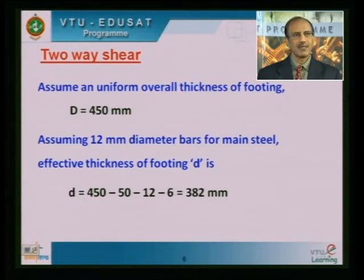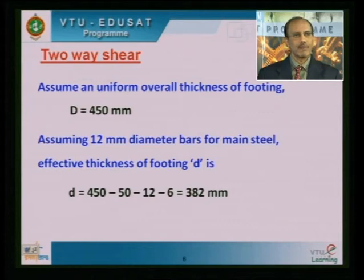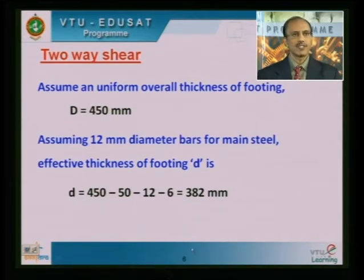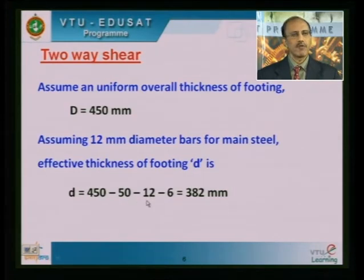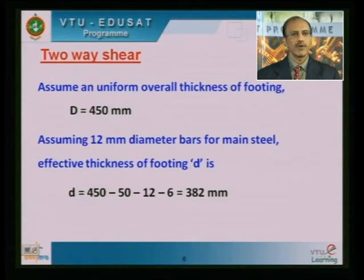The effective depth equals the overall depth minus the clear cover of 50 mm, minus the diameter of the bar for the lower reinforcement, minus half the diameter for the upper layer. This gives d = 382 mm. Having calculated this, let us talk about the critical section for two-way shear. As discussed earlier, the critical section for two-way shear — also called punching shear — occurs at a distance of d/2 from the face of the column along the periphery.